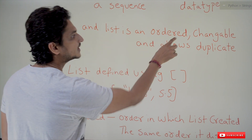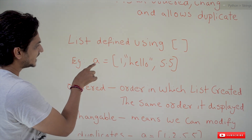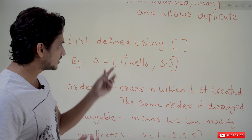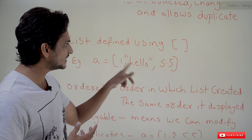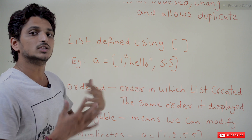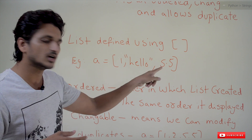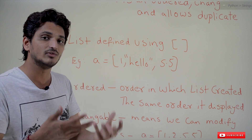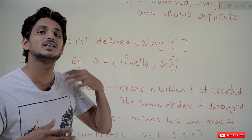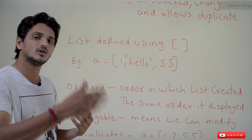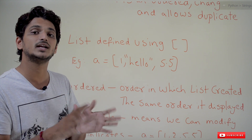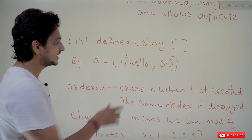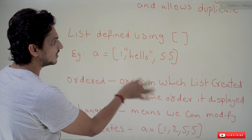Coming to the next point, a list is ordered. What does ordered mean? Take the example: a = [1, 'Hello', 5.5]. We call 1, Hello, and 5.5 elements. We mentioned an order — this is the first element, second element, third element — and the list will maintain that order. When we display the list, it will display in the order in which it was created. In our next classes, when we discuss about set and dictionary, those data types won't maintain the order, but list does.